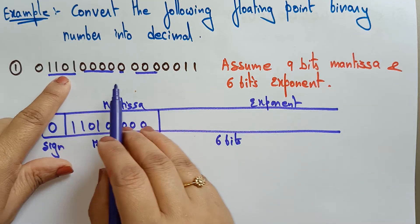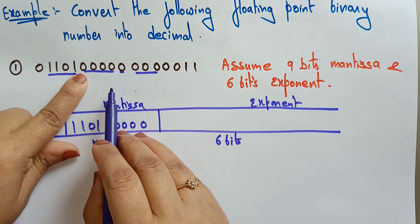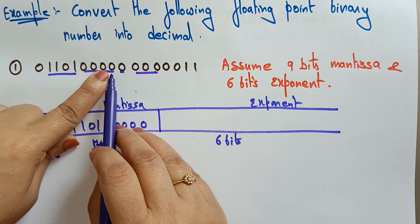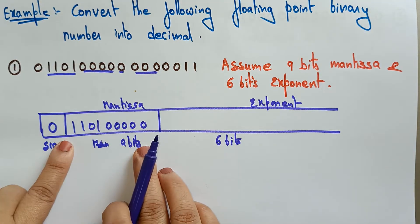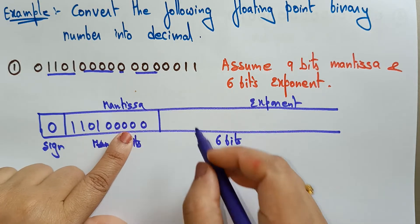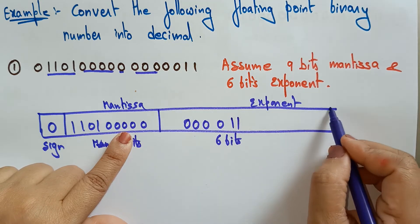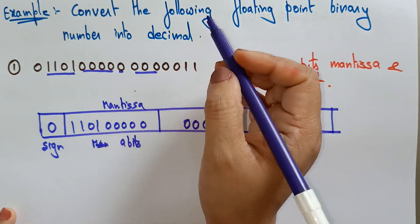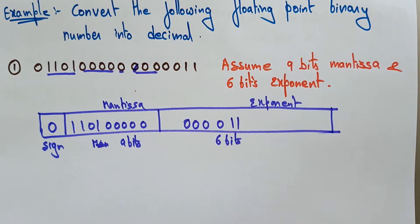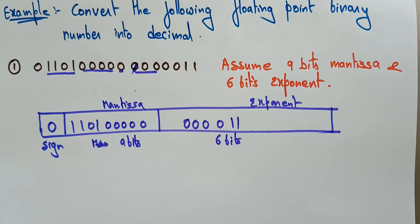Let me verify: the mantissa is 1 1 0 1 0 0 0 0 0 — nine bits total. The exponent is the remaining six bits: 0 0 0 0 1 1. Sorry, while copying I made a small mistake, but this is the number as given, now represented in the sign-mantissa-exponent format.